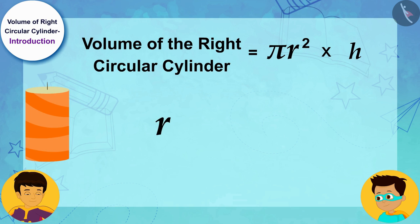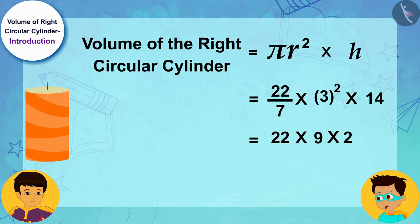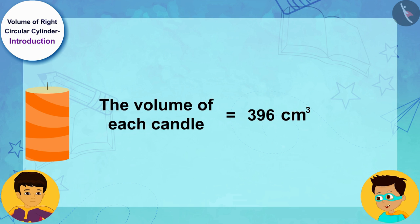The volume of each candle is 396 cubic centimeters. This means I would need 396 cubic centimeters of wax to make each candle.